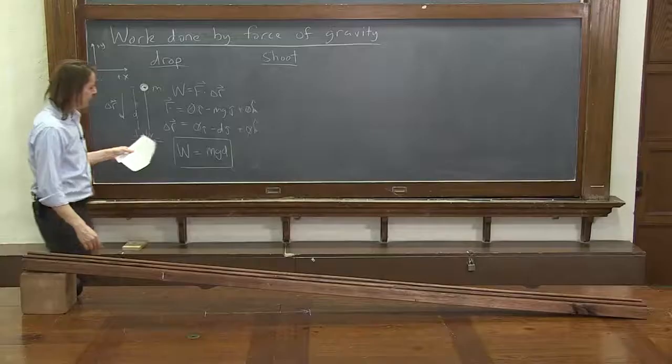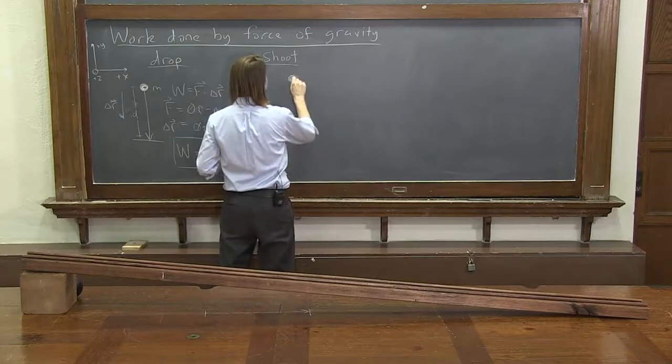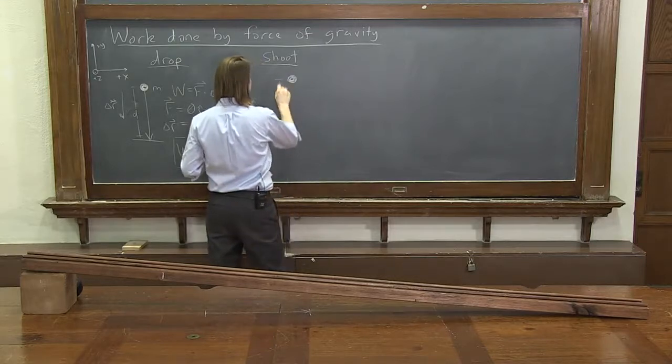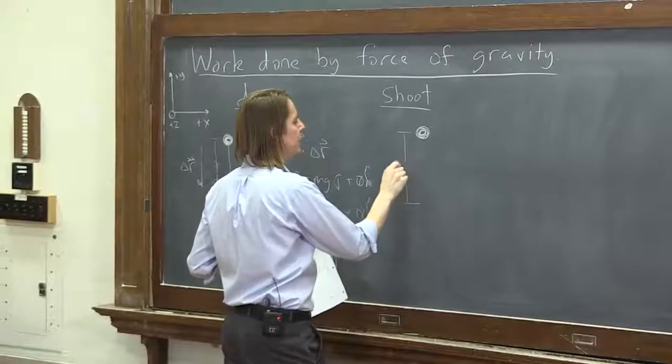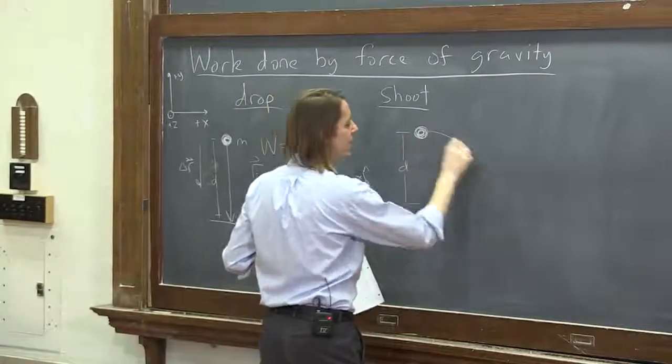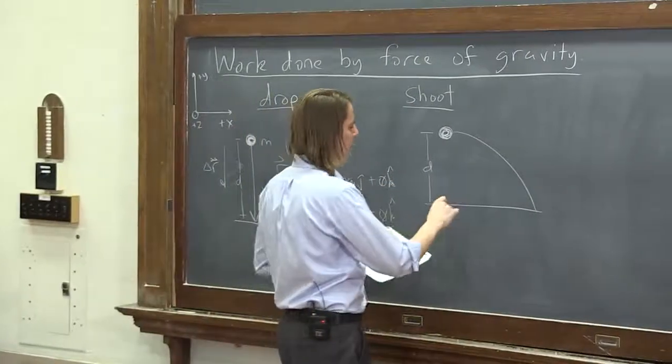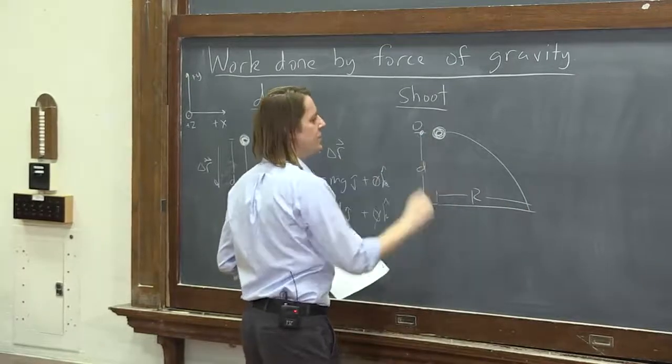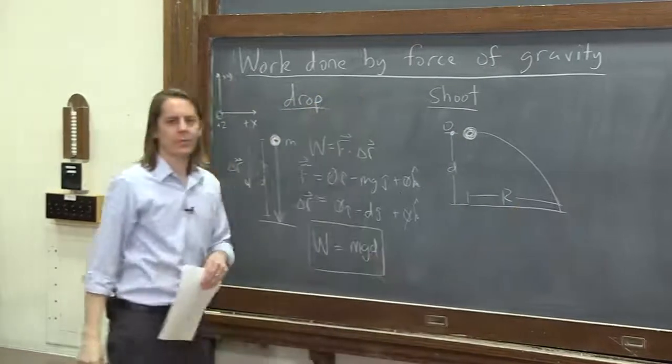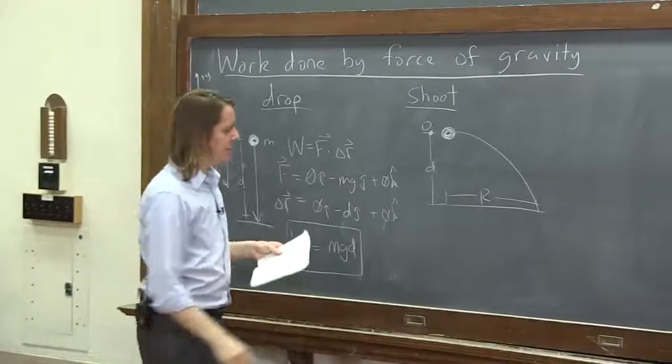Now let's look at shoot. So shoot was the one that we shot it with a little bit of an initial horizontal velocity. It also fell through d, but it went like that. And it made it through some distance of the range, so we'll call that r. But we'll still keep this as the origin, just like we did before. Okay, so let's calculate the work in this case.